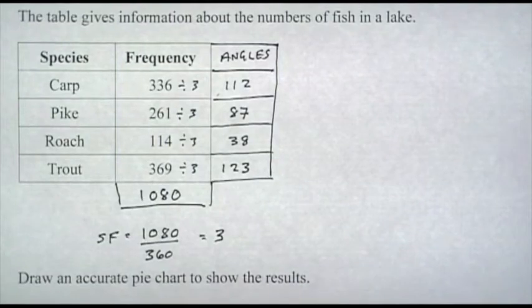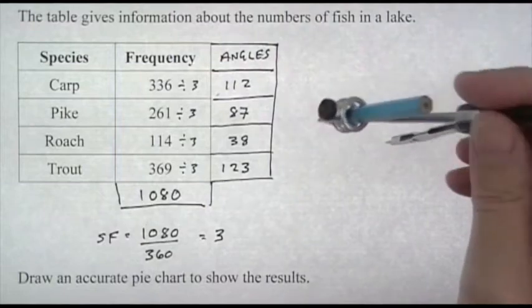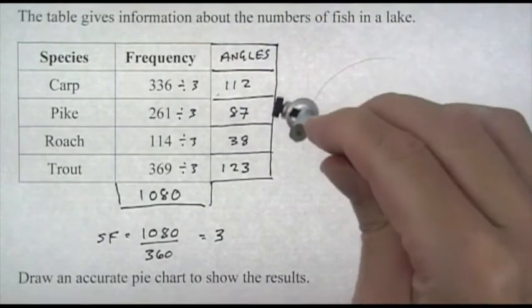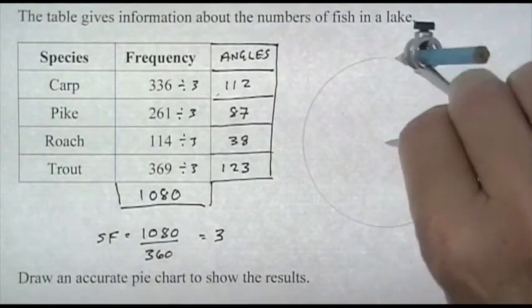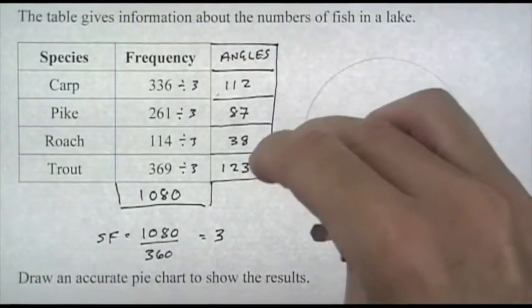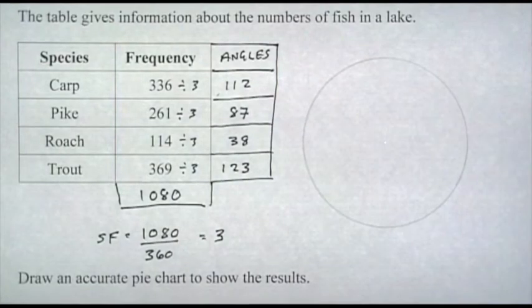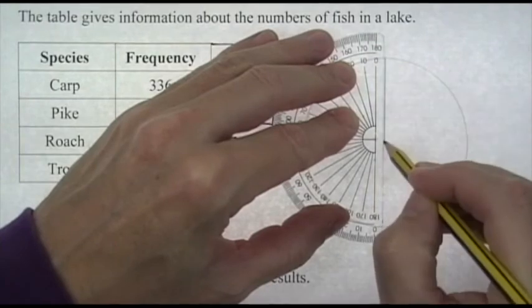Again we draw our circle, remembering it's easier to draw a circle with several arcs which you join together than trying to draw one continuous arc. Then from the center of the circle straight up, draw your starting line.